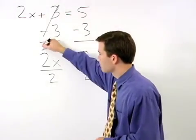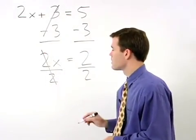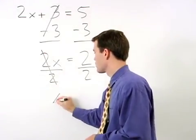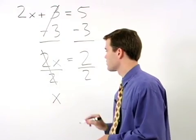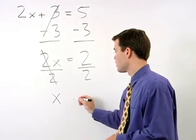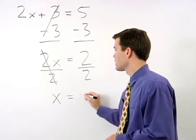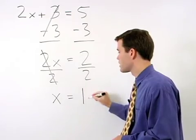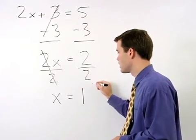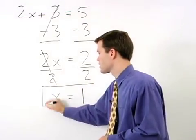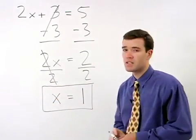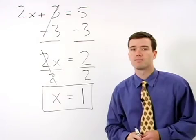On the left, the 2s cancel and we're left with x. On the right, 2 over 2 simplifies to 1. So our answer is x equals 1.